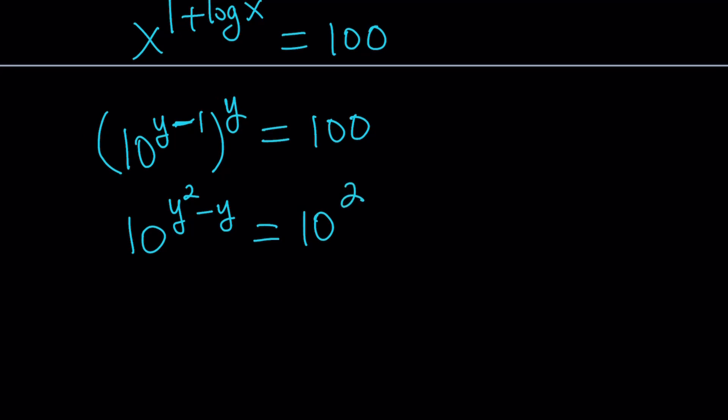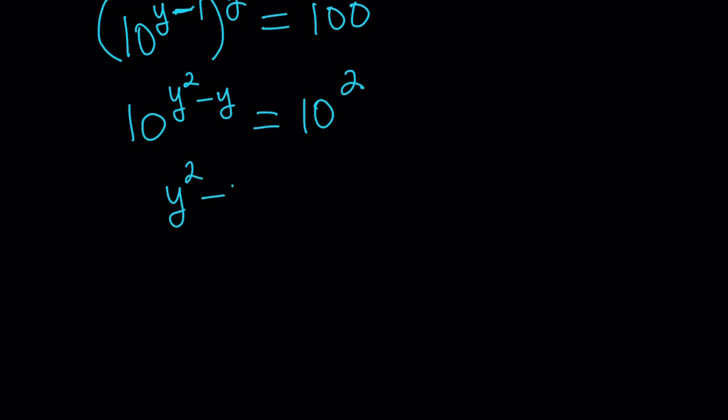We can go ahead and multiply the exponents. 10 to the power y squared minus y equals 100. But 100 can be written as 10 to the second power. And from here, since the bases are equal, we can safely say that the exponents are equal. So y squared minus y equals 2.